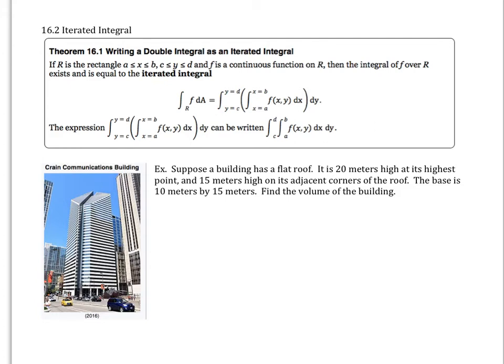This is 16.2, iterated integrals. We want to take what we were calling a double integral and represent it as an iterated integral. So if we have R as a rectangle for our base and F is a continuous function on R, then the integral of F over R exists and is equal to the iterated integral.